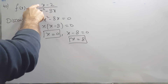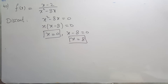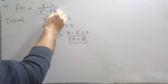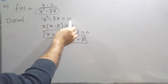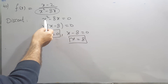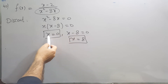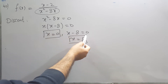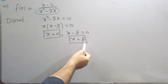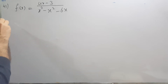For question 40, the function is x minus 2 divided by x squared minus 8x. The discontinuity is when the denominator equals zero. Taking x common gives x(x minus 8) equals zero, so x equals 0 or x minus 8 equals zero, meaning x equals 8. The function is discontinuous at two points: x equals 0 and x equals 8.